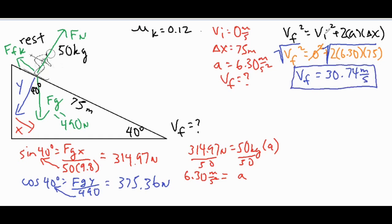Plugging in: zero squared is zero, so we take 2a times Δx, find that product, take the square root of both sides, and get a final velocity of 30.74 meters per second. Now for the second part of the problem we are going to include friction.